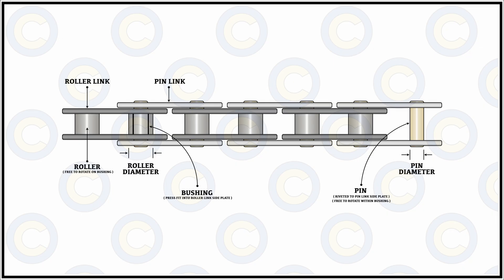Adjacent roller links need to be connected in tandem to construct an entire chain. The pin link provides this continuity — it contains two adjacent pins that are riveted at their ends, creating an external clamping or riveting assembly that ties the roller links together without affecting their freedom or rotational motion. The bushings are press fit into place, meaning they are fit in cold condition and then slowly allowed to expand, forming the internal side of the entire roller assembly.